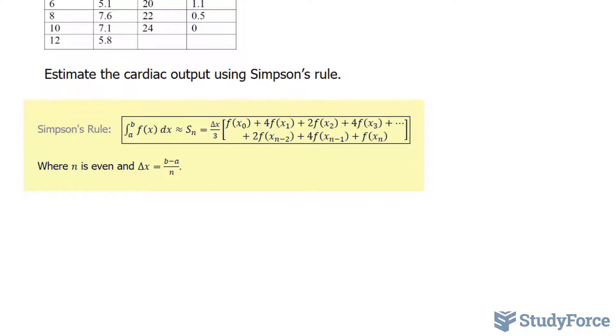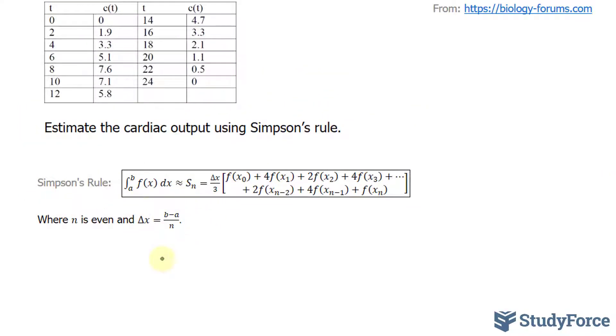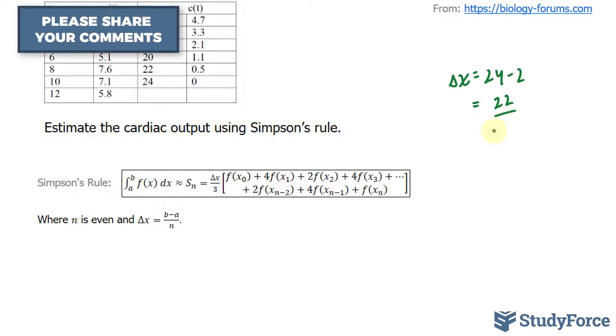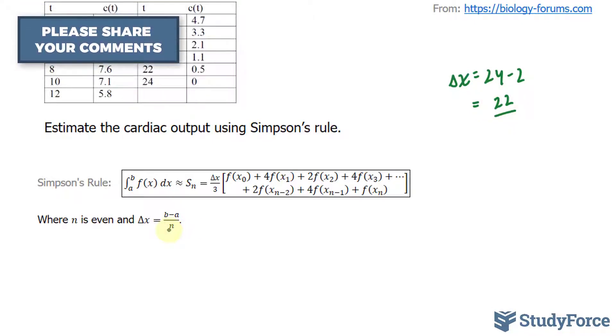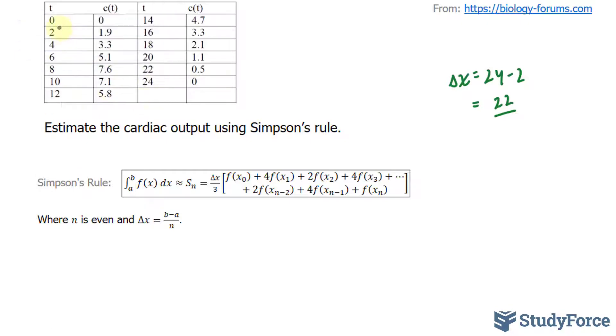The first thing that we will do to calculate the cardiac output is find out what delta x is. To find delta x, we'll use this formula, where b represents our upper bound and a represents our lower bound. So we'll go from 2 to 24. Delta x equals 24 minus 2, that equals 22, and we'll divide that by the number of observations. So from 2 to 24, that's 2, 4, 6, 8, 10, 12. 22 divided by 12 is 11 over 6, and we're going to take this number and divide it by 3. If we divide this by 3, we should end up with 2 over 3.